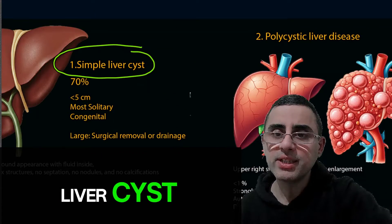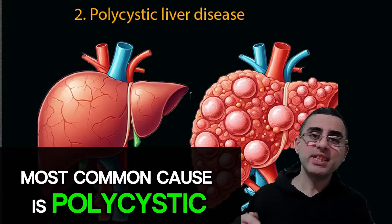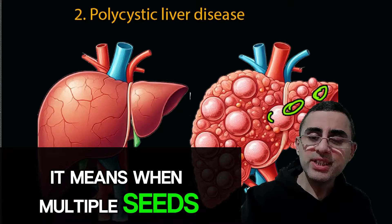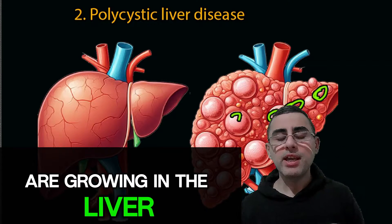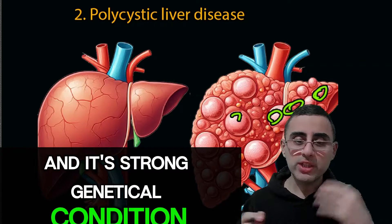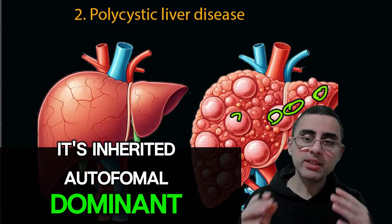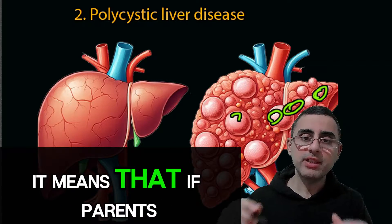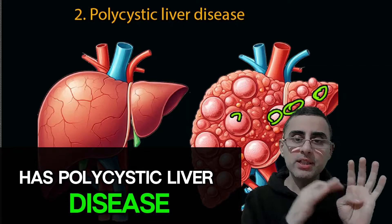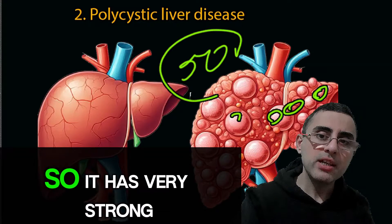The second most common cause is polycystic liver disease, meaning multiple cysts growing in the liver. It is a strong genetic condition — inherited in an autosomal dominant pattern — meaning that if a parent has polycystic liver disease, the child has a 50 percent risk of getting this disease. It has a very strong genetic component.